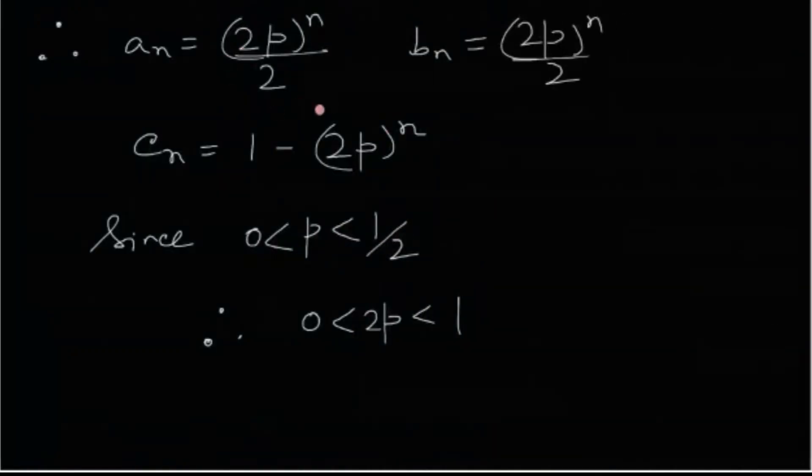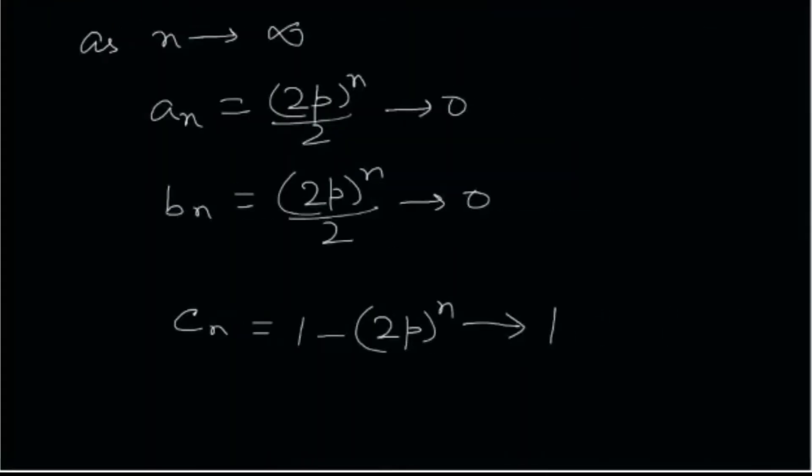So under the effect of limit, these three things we have got an, bn and cn. And p is stated to be less than half. So that means 2p lies between 0 and 1. So under the effect of limit, that means as n tends towards infinity, an tends towards 0, bn also tends towards 0 and cn tends towards 1.